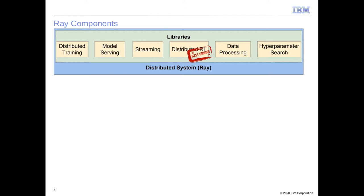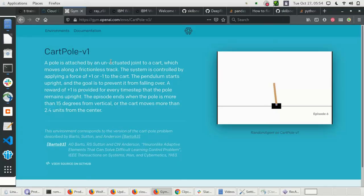There are other libraries on top of Ray — for example for distributed training, model serving, streaming, data processing, and hyperparameter search — because Ray is a universal distributed computing platform. The best choice for using Ray is still distributed RL.